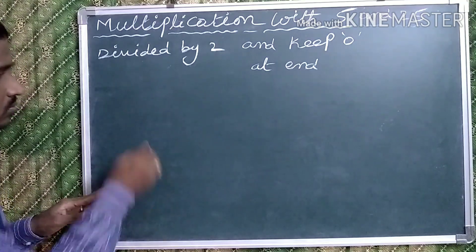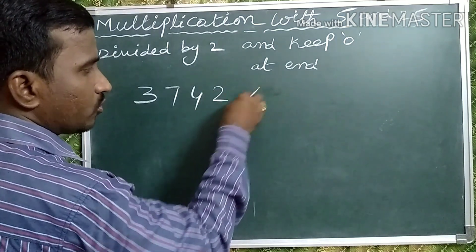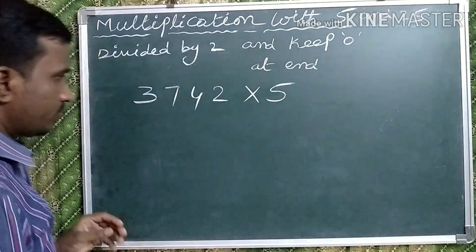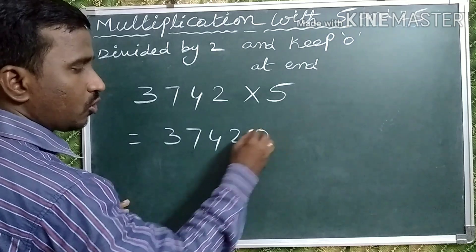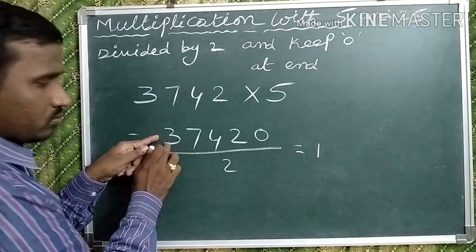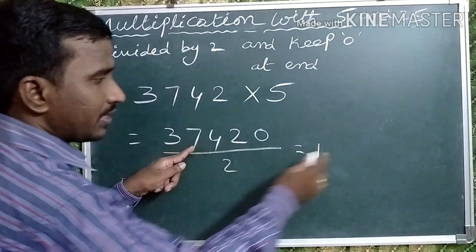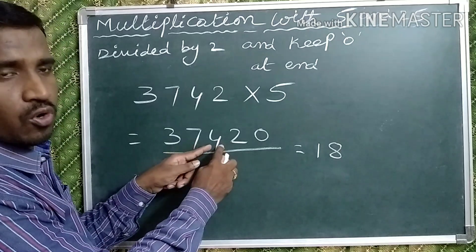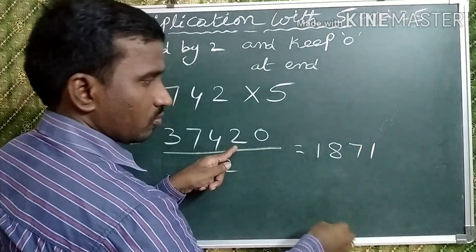Observe one more example: 3742 multiplied by 5. Keep 0 at the end — 37420 — and divide by 2. 1 two is 2; 3 minus 2 is 1, then 17; 8 twos are 16; carry 1, then 14; 7 twos are 14; 1 two is 2; and 0. Answer: 18710.